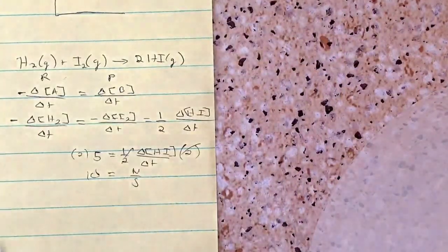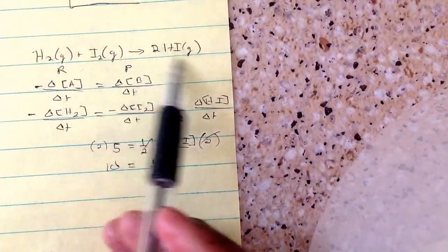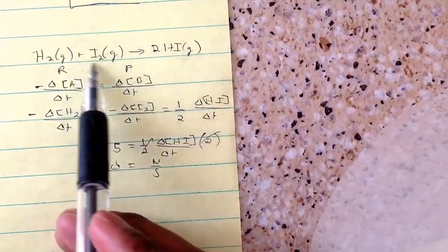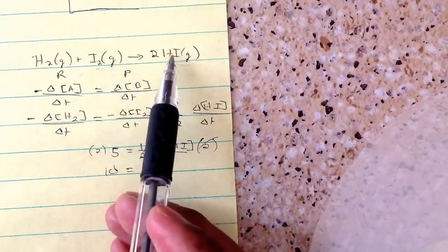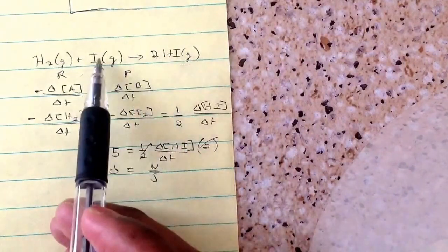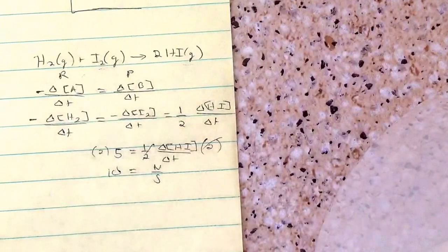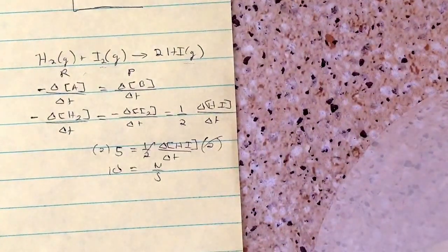And this logically makes sense, because the rate of HI should be more than I2, because it should be double. The rate of appearance of HI should be double the disappearance of I2. So that's how you can logically look at that.